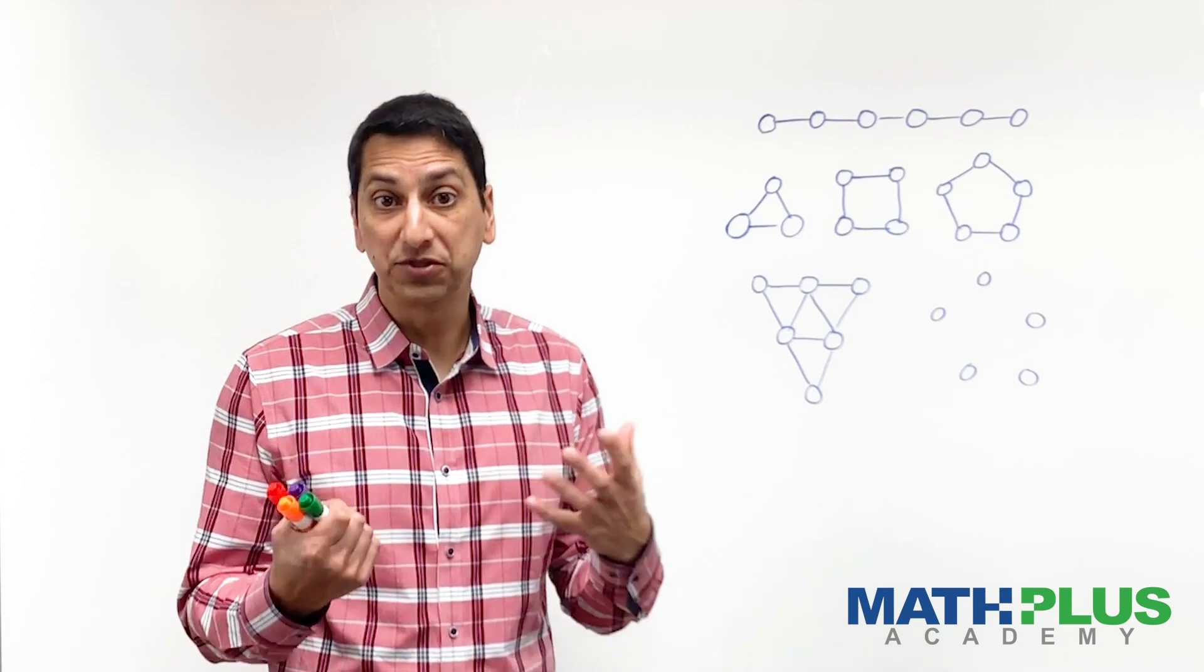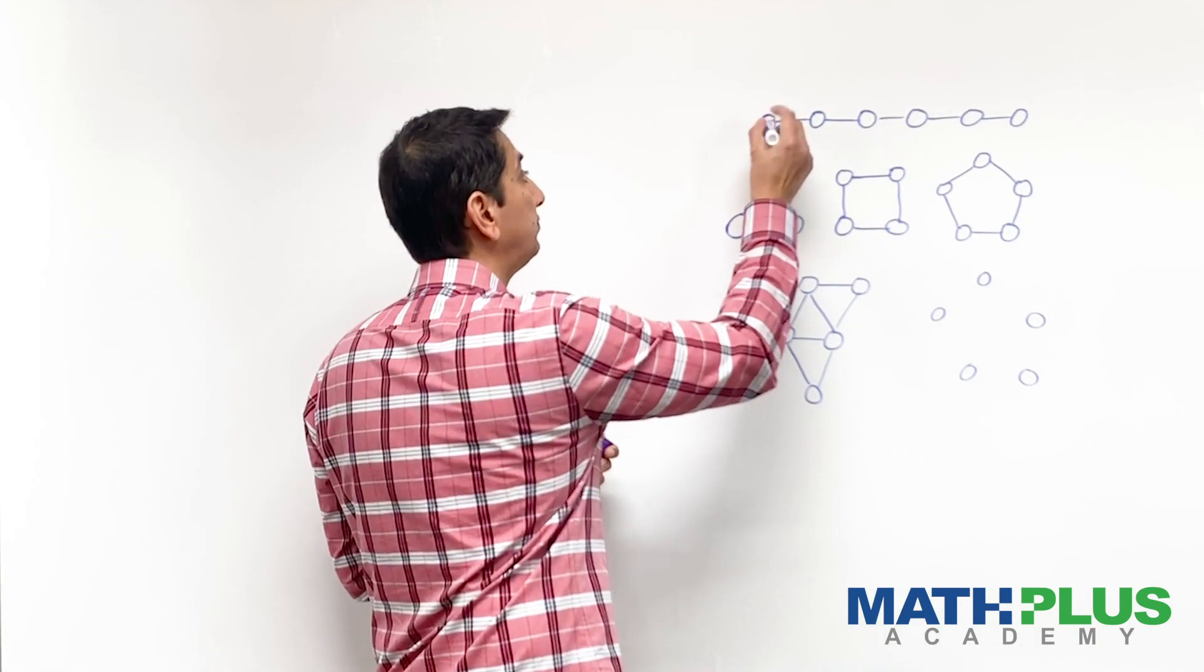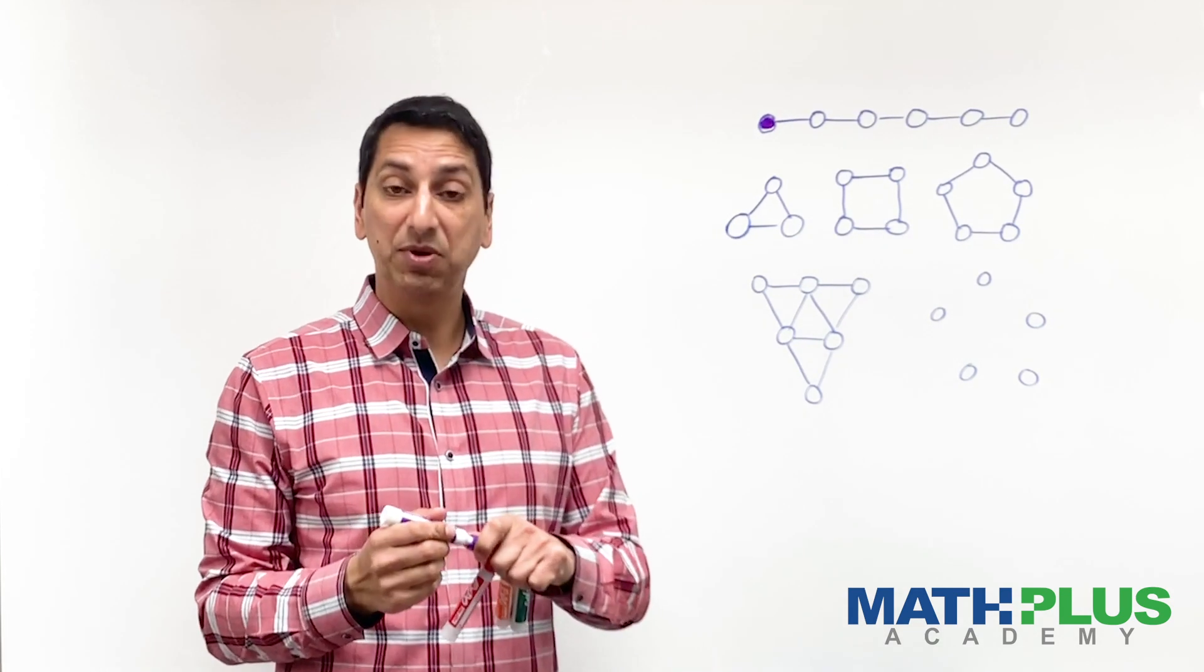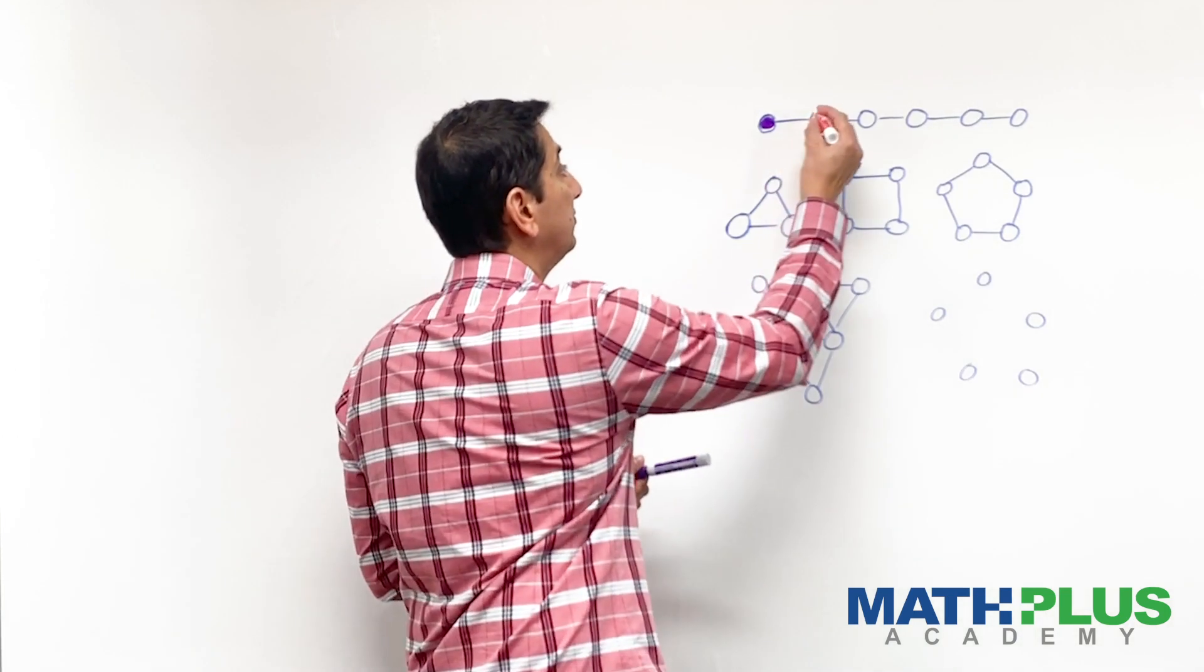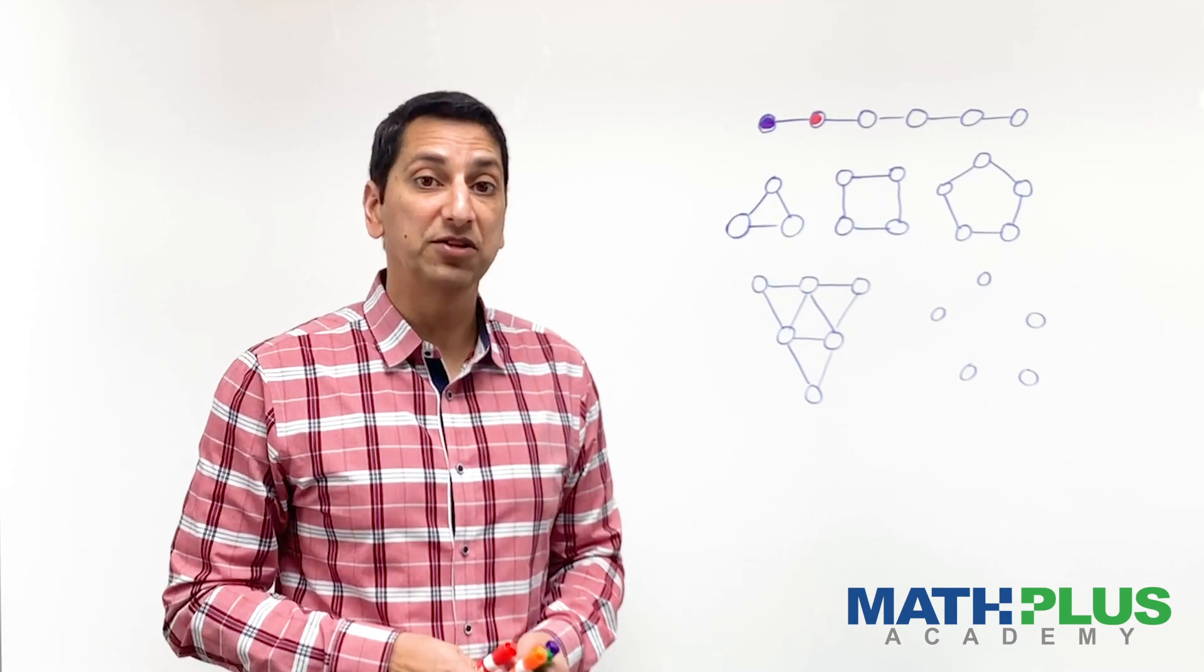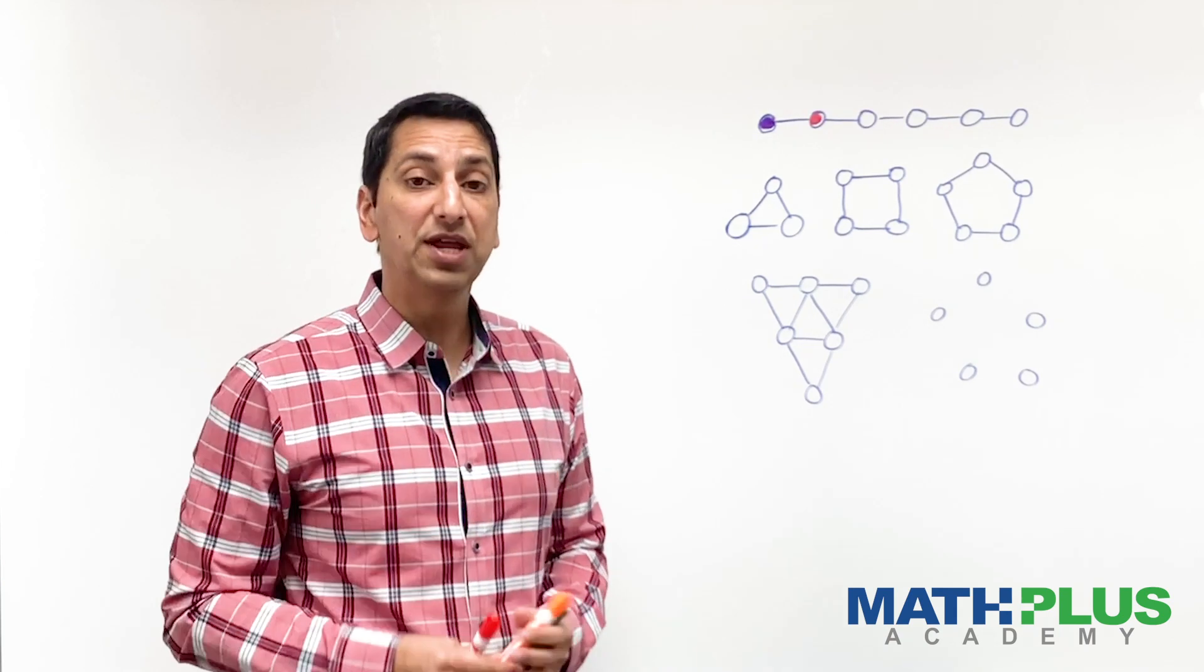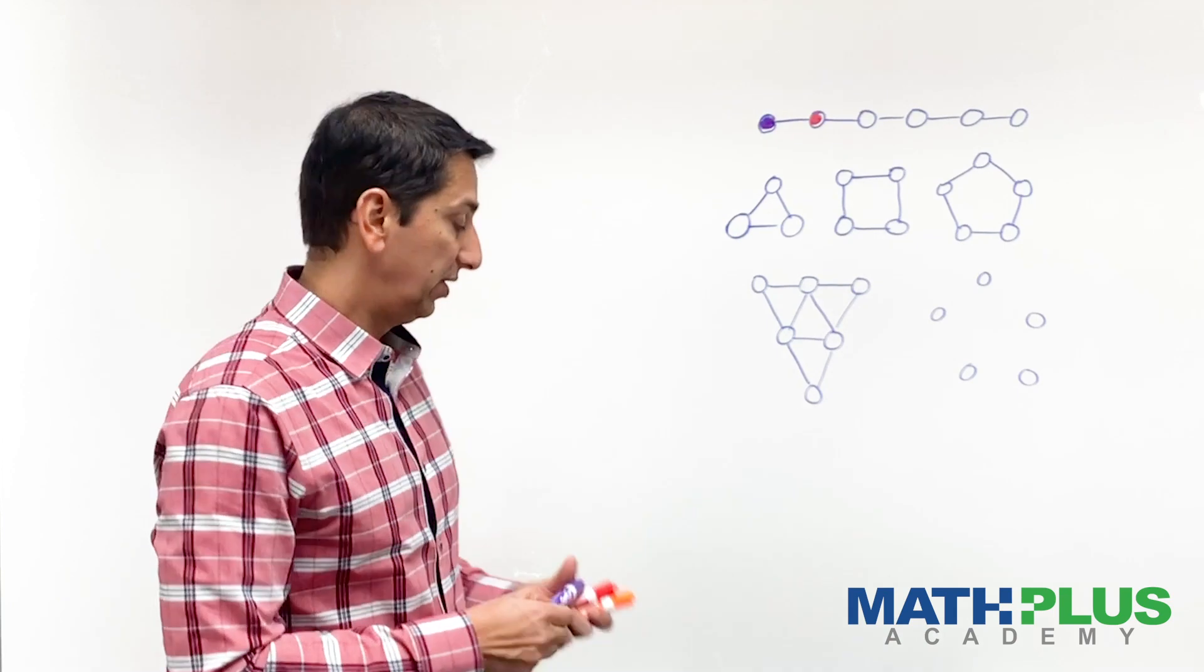So let's try the first one at the top. You might start by coloring in the first dot purple. Now, of course, the second dot cannot be purple because they're connected. So maybe I'll use red. If I'm trying to do this in the fewest number of colors possible, I could certainly choose another color, but I don't need to. I can go back and use purple.